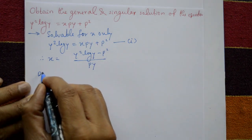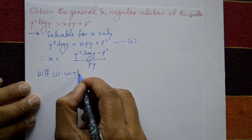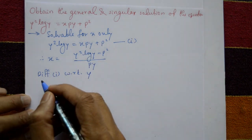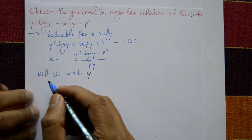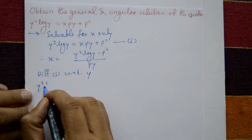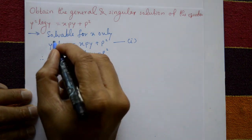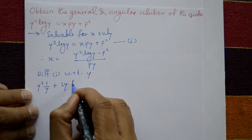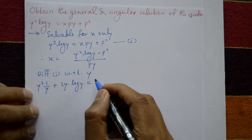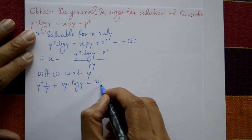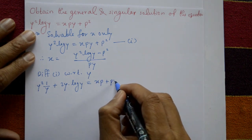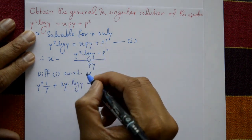Solvable for x means differentiate with respect to y. Differentiating equation one using the product rule: y² as-is, differentiate log(y) with respect to y gives 1/y, plus differentiate y² gives 2y, times log(y) as-is. On the right side, apply the product rule to xpy: differentiate y with respect to y gives 1, times xp.